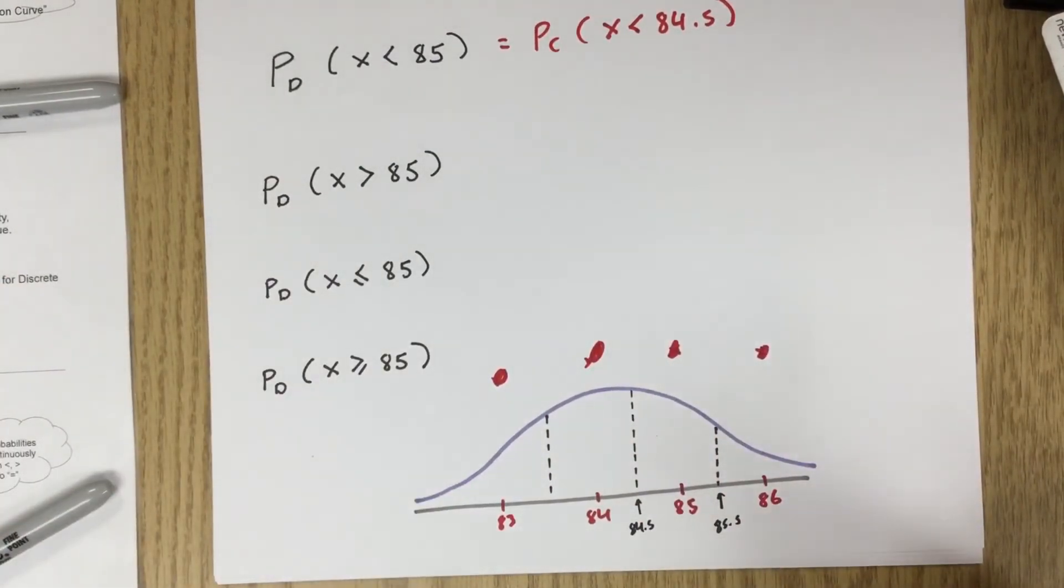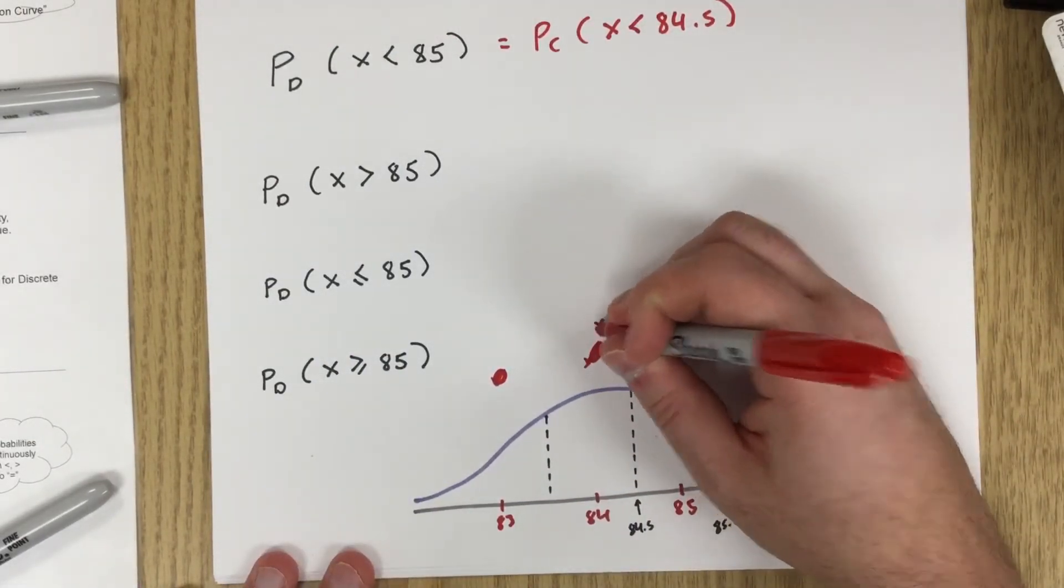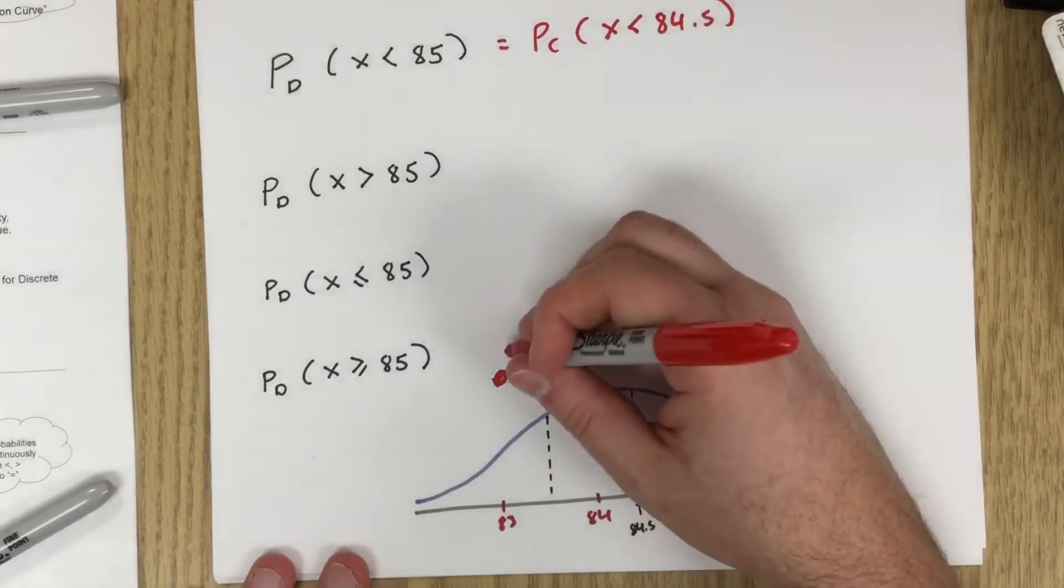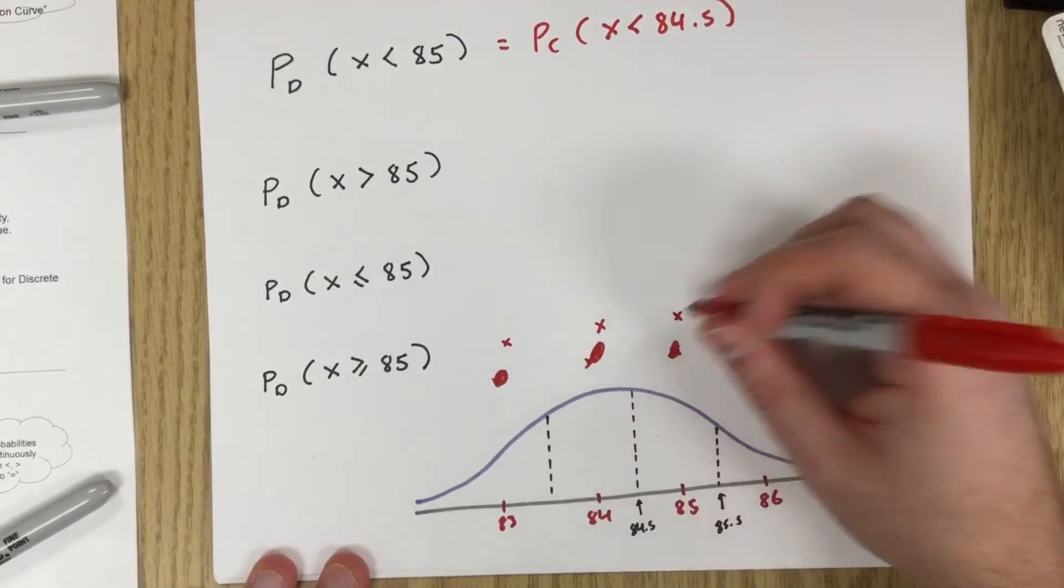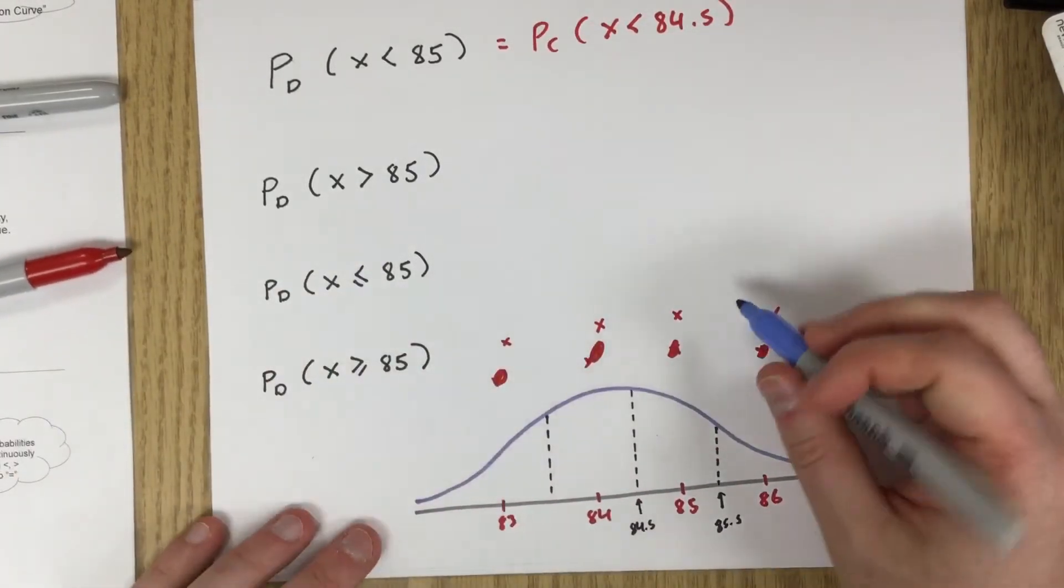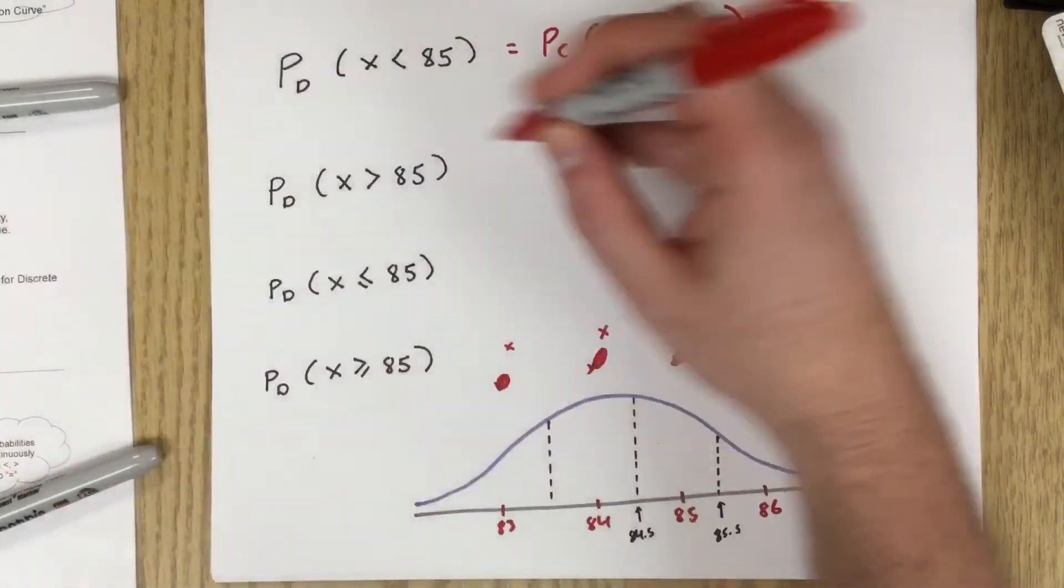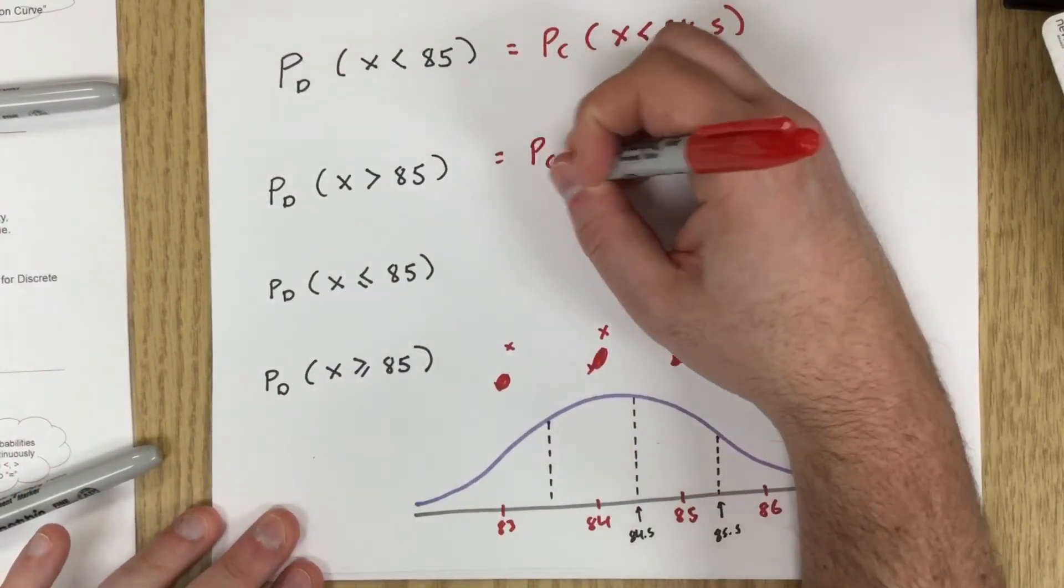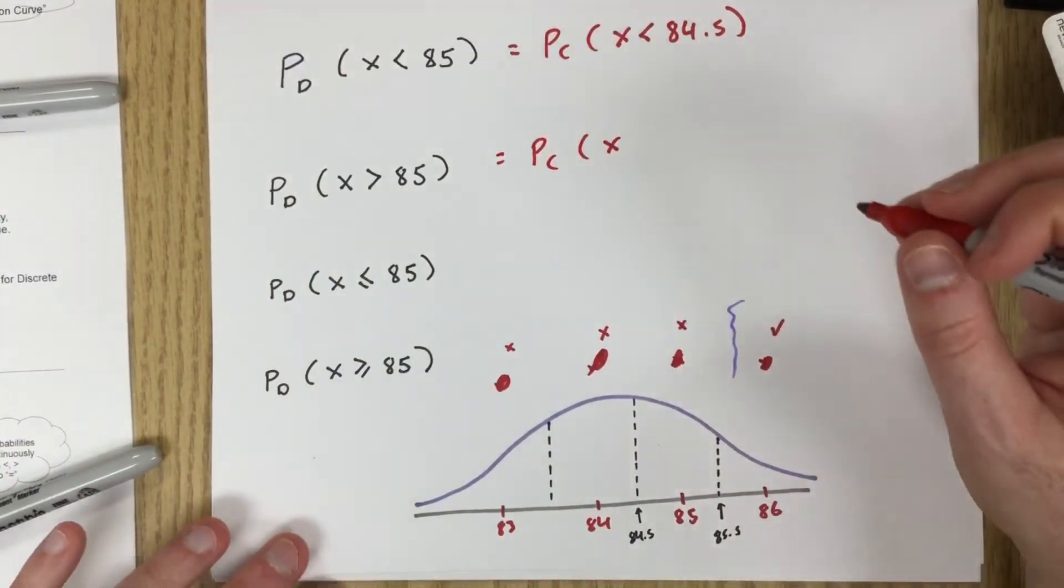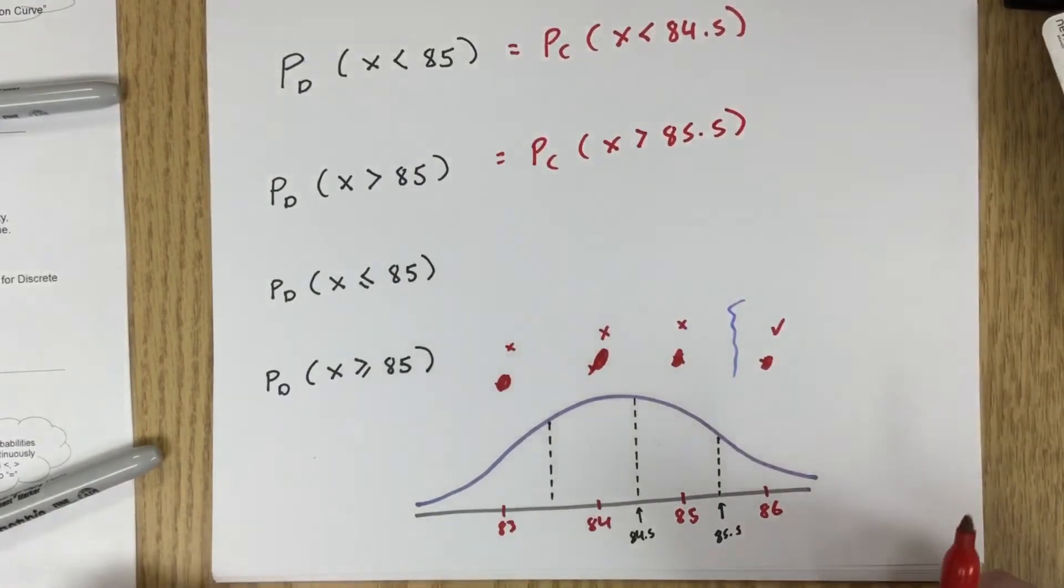x has to be bigger than 85. So bigger than 85, does 84 count? It does not. Does 83 count? It does not. Does 85 count? It does not, because 85 is not bigger than 85. This one counts. So essentially that's our dividing line over there. And it's going to be 85.5 or more. So that's going to be the same as x is bigger than 85.5.